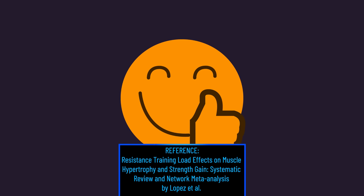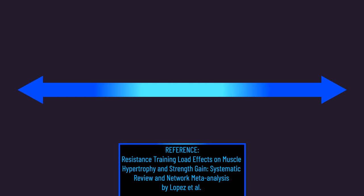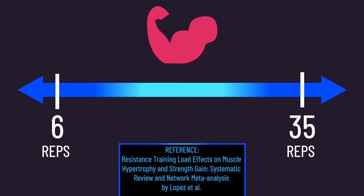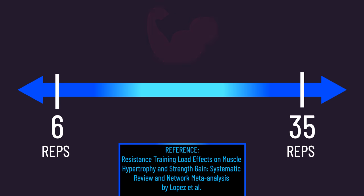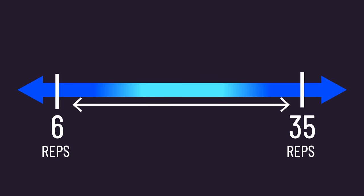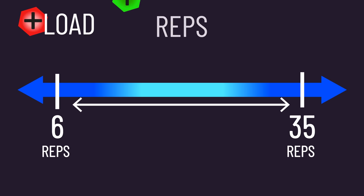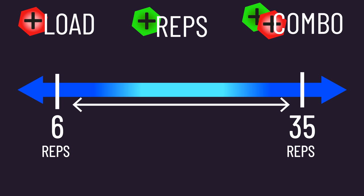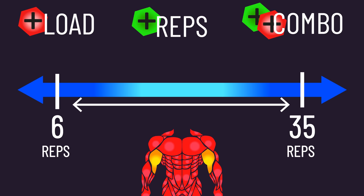A wide range of studies suggests per set, reps between 6 and 35 are similarly effective for muscle growth, provided those reps are performed to or close to failure. So long as you stay within this range from session to session, regardless of whether you do this by increasing load, rep numbers, or a combination of both, it makes sense muscle growth outcome should be the same.